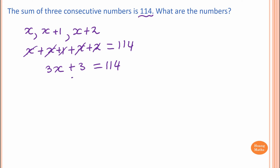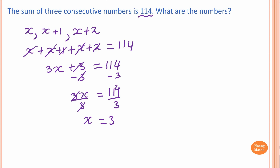To solve this, we minus 3 on both sides — this cancels out. So 3x is equal to 111. We divide by 3 on both sides, that cancels out. So x is equal to 37. So x is the smallest number. Therefore, the numbers are 37, 38, and 39.